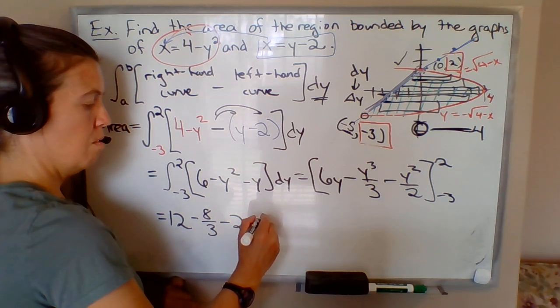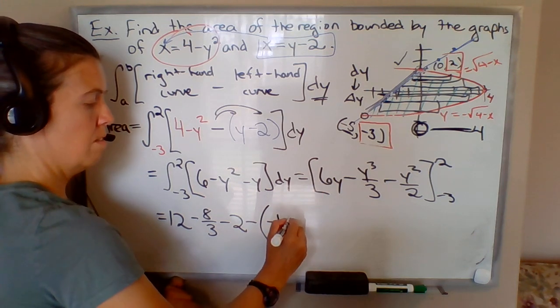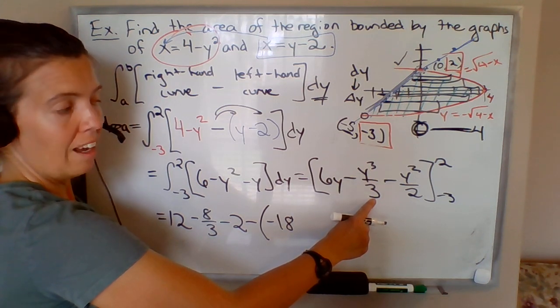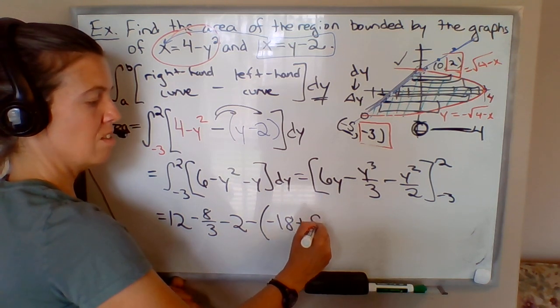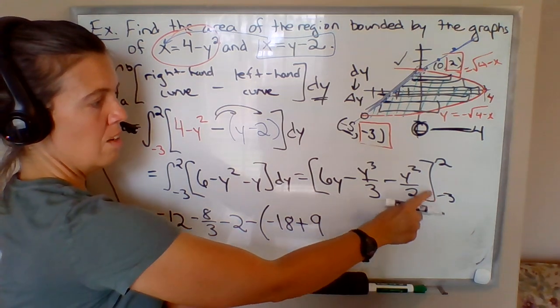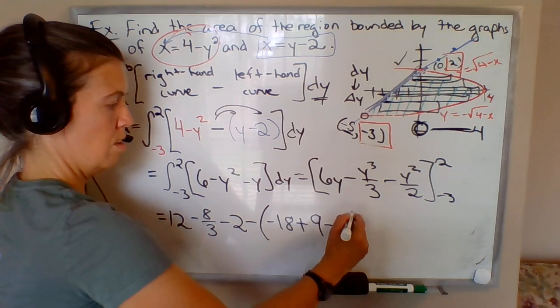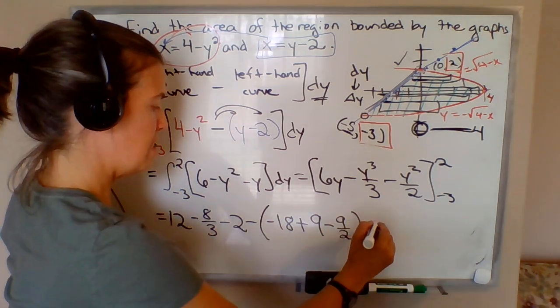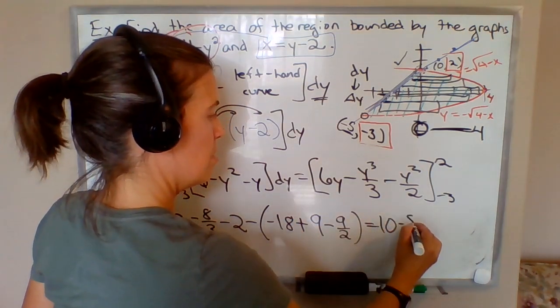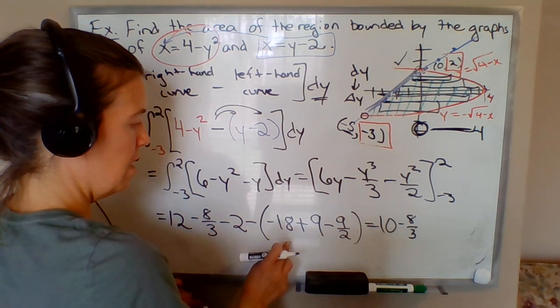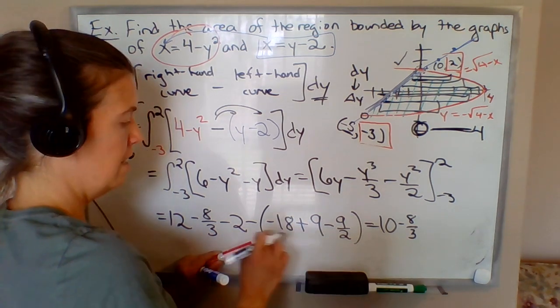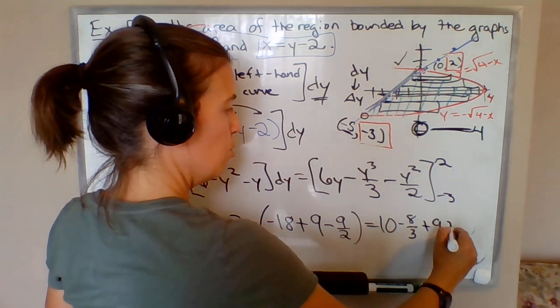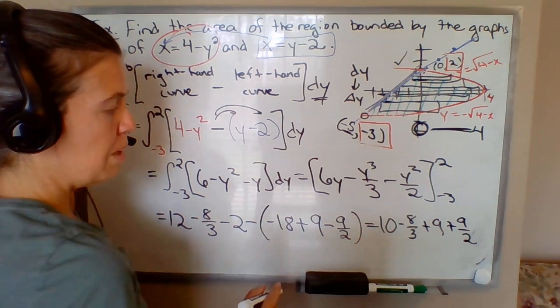Minus 6 times -3—let's see, -3 cubed will be -27 divided by 3 will be -9. And then here, -3 squared will be 9/2, so minus 9/2. Let's see, 12 - 2, so that's 10 - 8/3. This will be -18 + 9, so that's -9. If I apply this negative, that'll make it positive 9, and then distribute the negative here, that'll be plus 9/2.